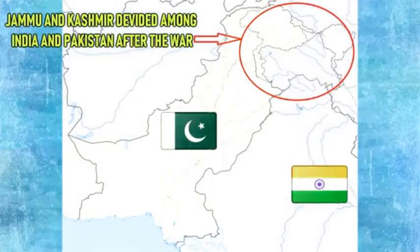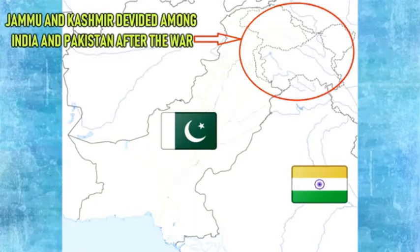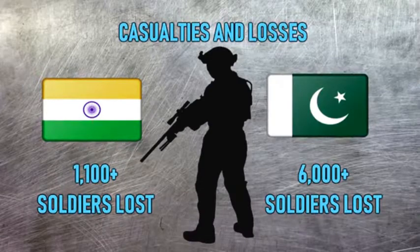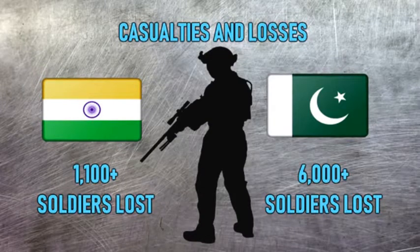The UN ceasefire line of 1949 later became the Line of Control after the Simla Agreement of 1972. Pakistan controls roughly a third of Kashmir whereas India controls the rest — Kashmir Valley, Jammu, and Ladakh. Casualties: India lost 1,100-plus soldiers killed; Pakistan lost 6,000-plus soldiers killed.